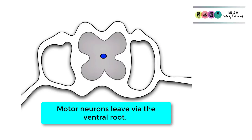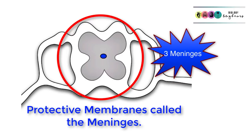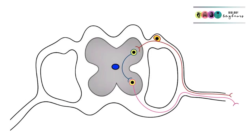The spinal cord and the brain are covered in protective membranes known as the meninges. There are three of them, and cerebrospinal fluid sits in between each one.